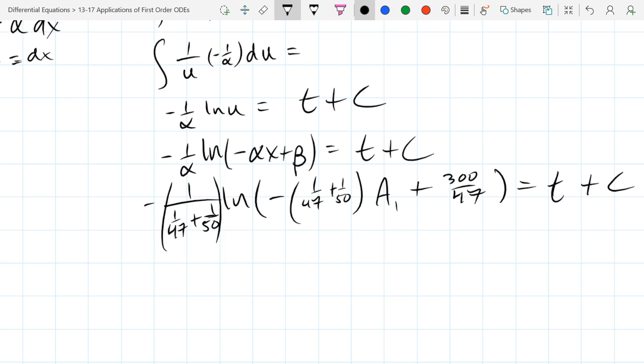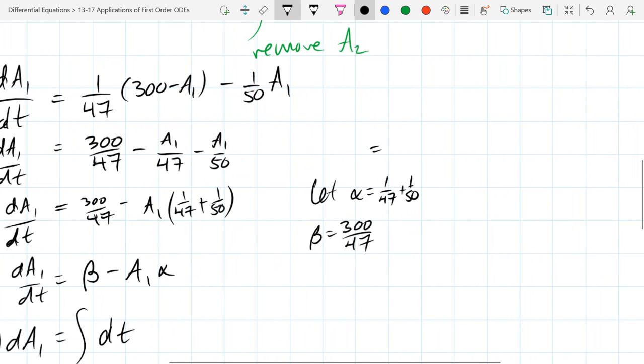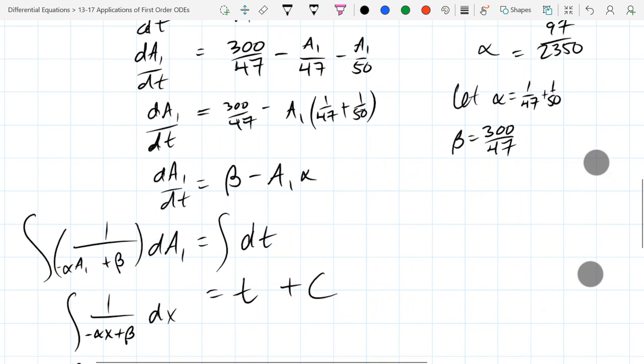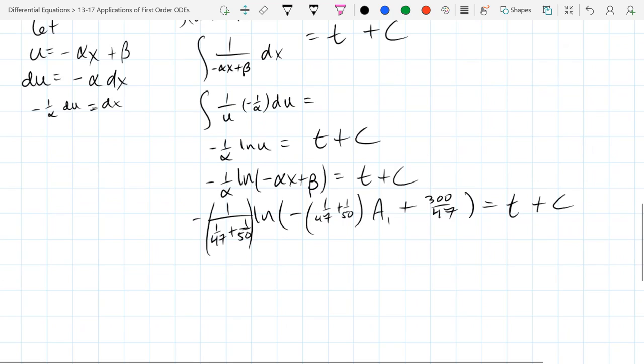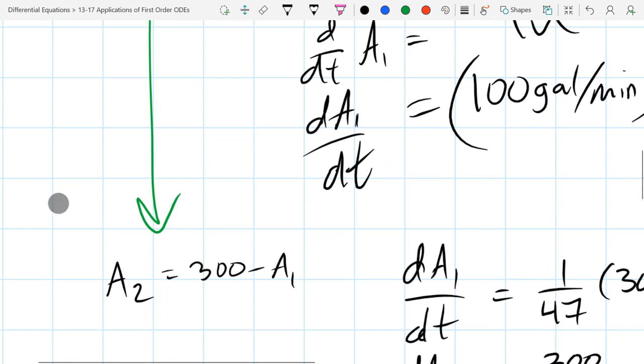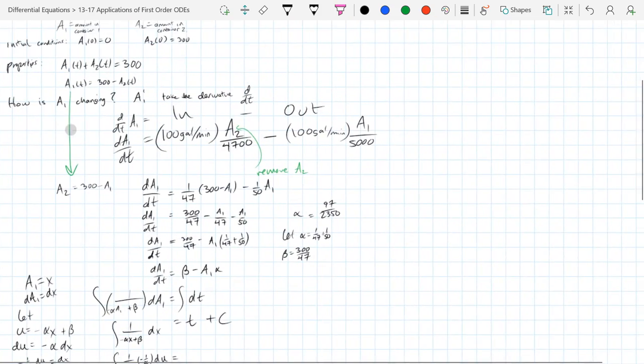I could solve for A1 if I wanted to. Just divide by that coefficient, that constant, and then take ln inverse. And then do a tiny bit more algebra. So I'd be able to get to A1 if I wanted to. So we could solve for A1. A2, you could do the whole thing over, or you could just go and write, using this, A2 is 300 minus what you got for A1.